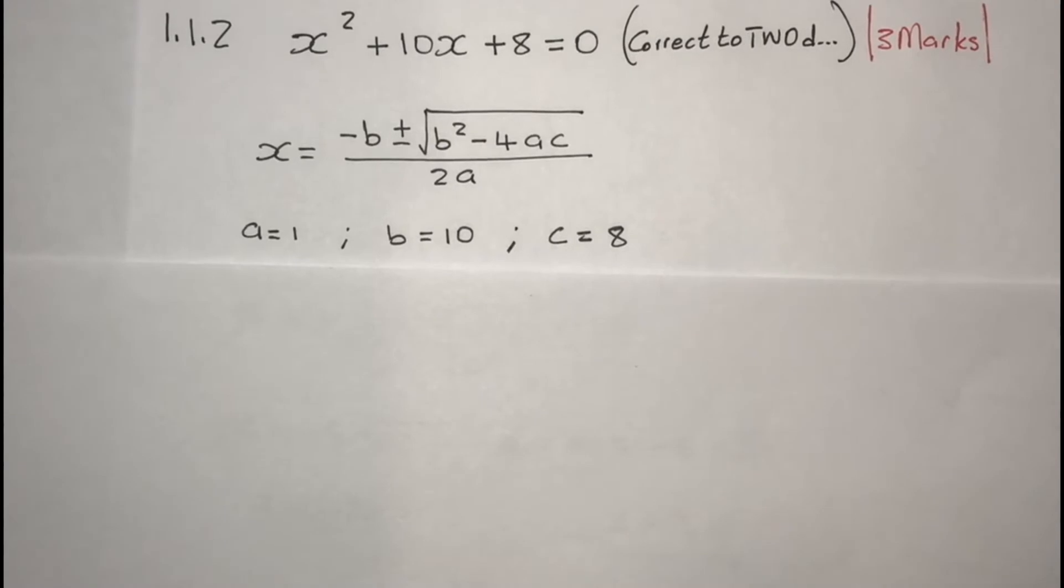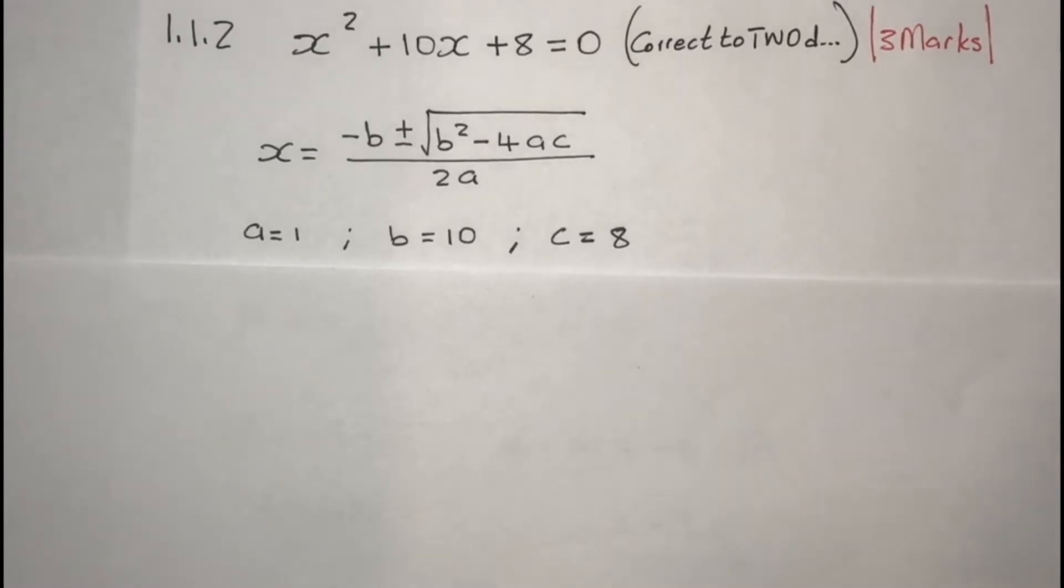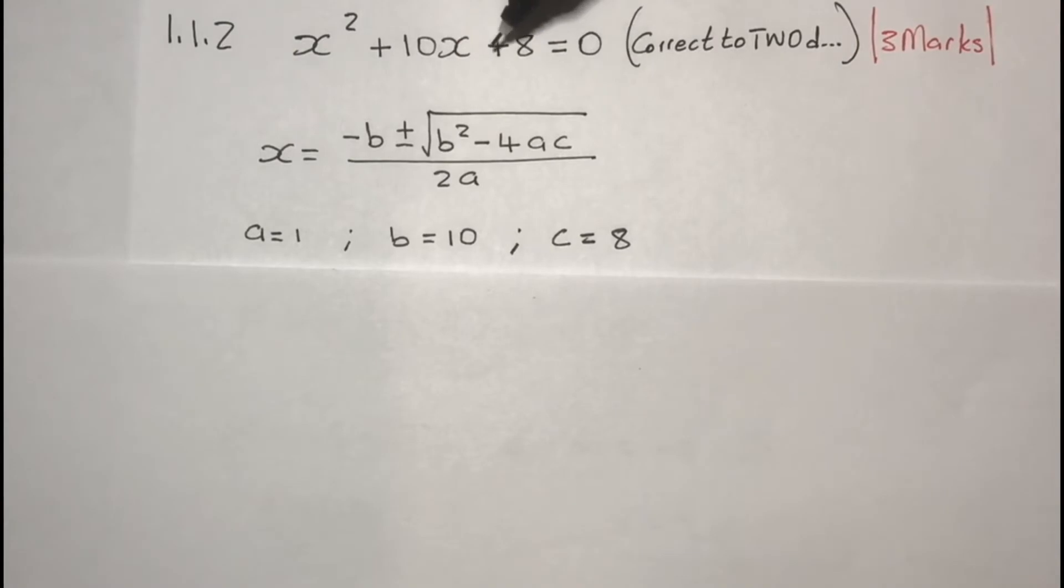Next step, you write down your values of a, b, and c from the original equation. So your a is 1, your b is 10, and your c is 8.